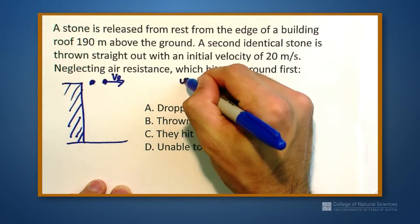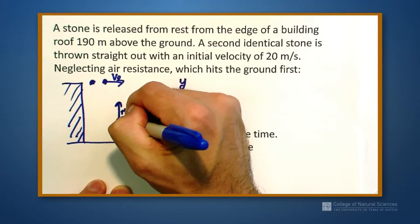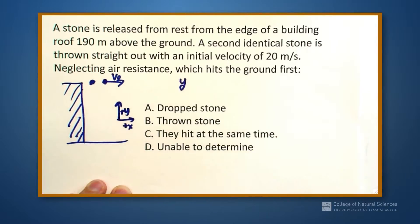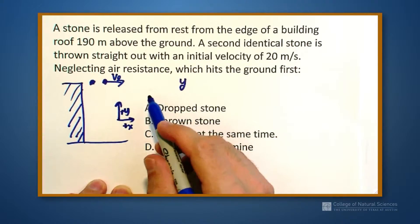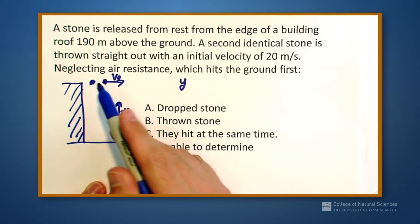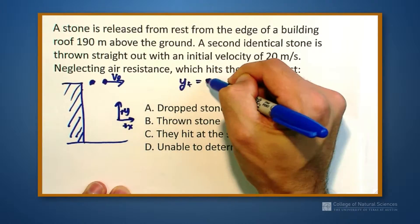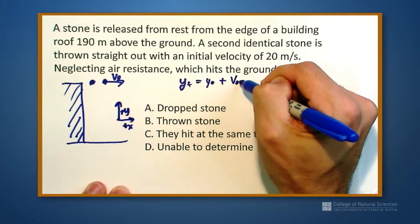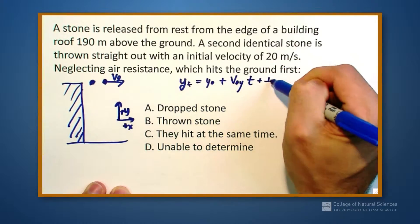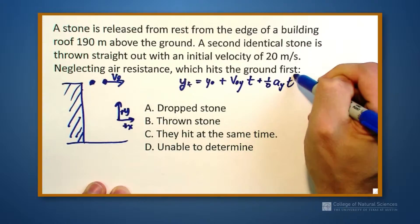So if I go in the y direction, assuming y is positive up, this is our coordinate system, y is positive up. That means that our final position is equal to our initial position plus v naught y t plus one-half a y t squared.